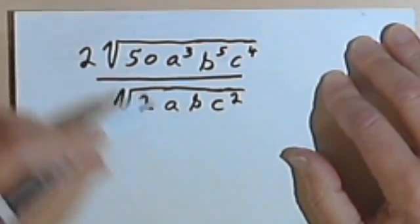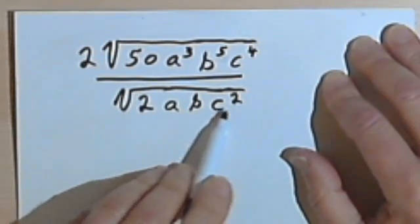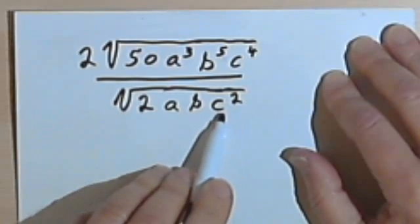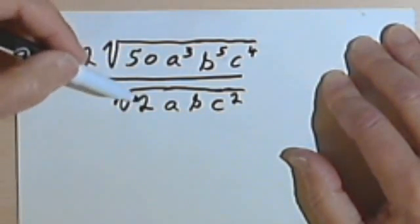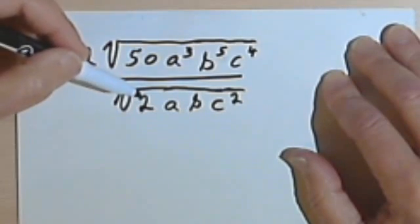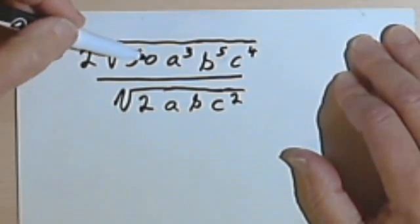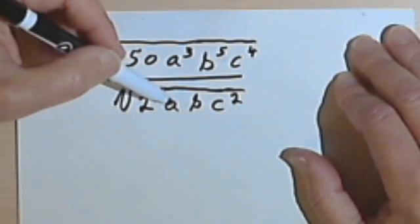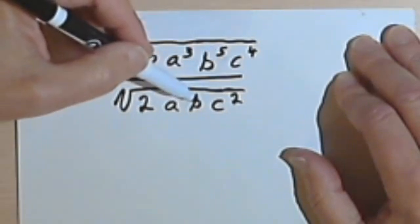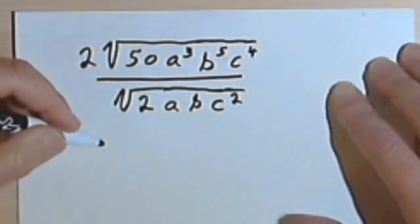Okay, now, I could pull a c out of that, I have this c squared, so I could do something with that. But looking at the other numbers, dividing 50 by 2 would really be nice, because that would give me 25. And if I have a to the 3rd over a, I could reduce that, and b to the 5th over b could be reduced. So let's make this all into one radical.